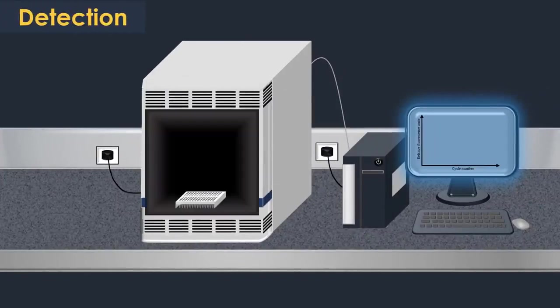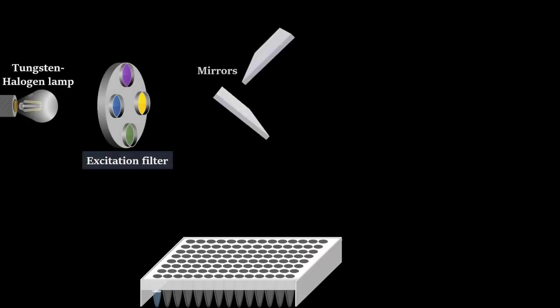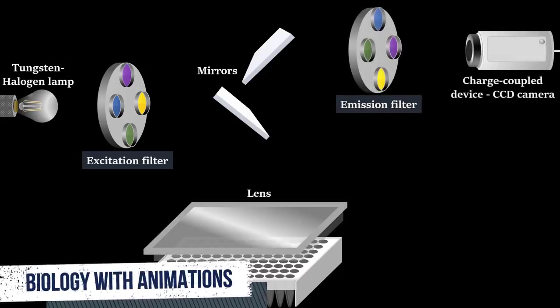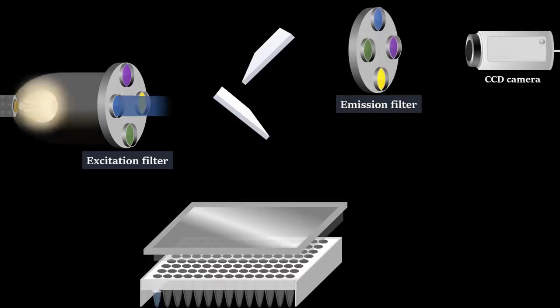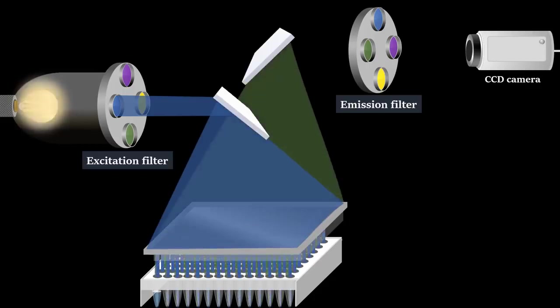For the measurement of the fluorescence signal, a tungsten halogen lamp, an excitation filter, mirrors, lens, an emission filter, and a charge-coupled device CCD camera are used. Filtered light from the lamp is reflected off the mirror, passes through a condensing lens, and is focused into the center of each well. Then fluorescent light emitted from the wells reflects off the mirror, passes through an emission filter, and is detected by the CCD camera.